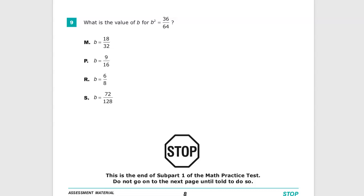What is the value of B for B squared equals 36 over 64? Now you're trying to find B and you're given B squared. So let's just look at that as an idea first.